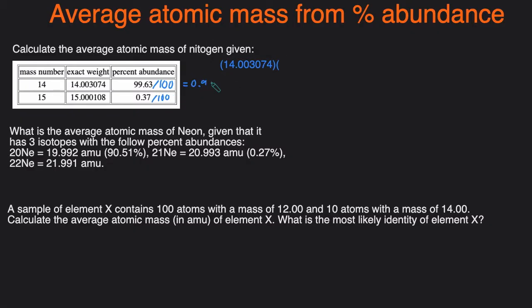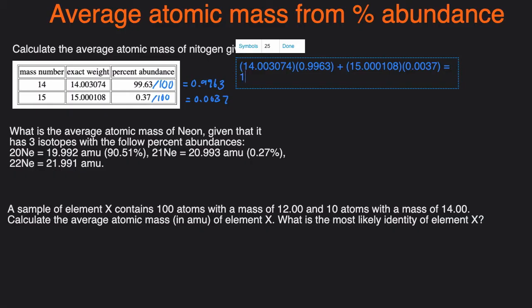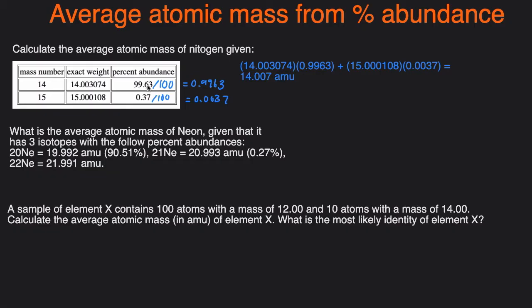Dividing by 100 gives us 0.9963 and 0.0037. So you take the mass and multiply it by the percentage in decimal form: 0.9963 for nitrogen-14, then add the mass of the other isotope, 15.000108, multiplied by its percent abundance in decimal form, 0.0037. Put that into the calculator and you get 14.007 AMU — AMU meaning atomic mass unit. You're doing a weighted average where you multiply the mass by the percent abundance converted to decimal form.